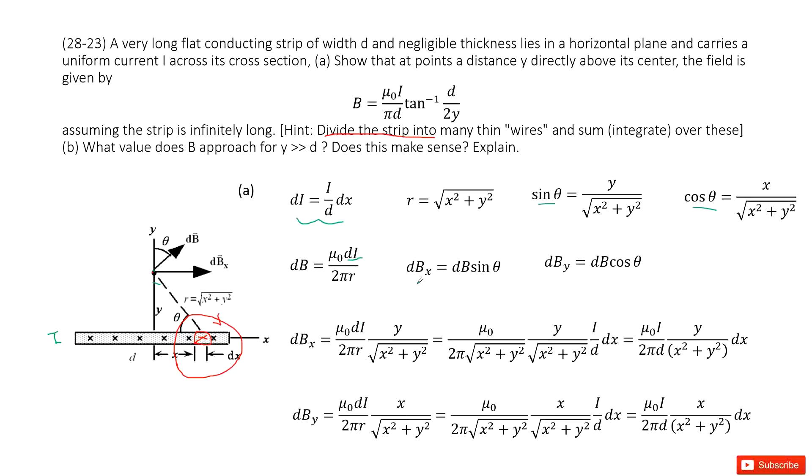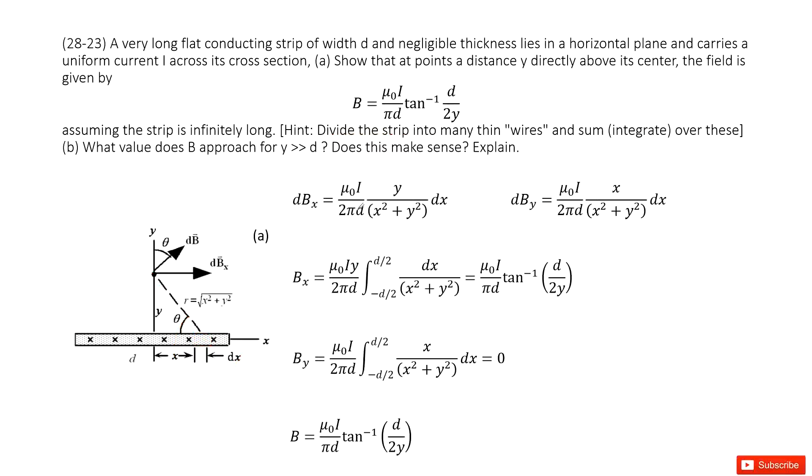So now you can see for dBₓ and dBᵧ we can input all the given quantities. And then we can simplify it. We get these two functions. It tells us we can integrate over this, the sum or integrate all over this.